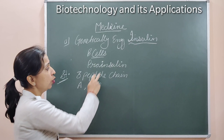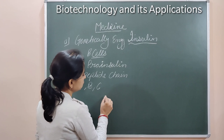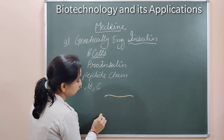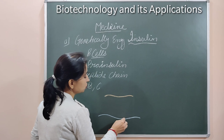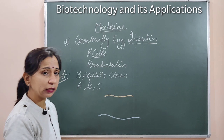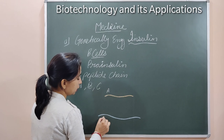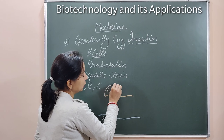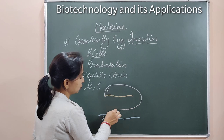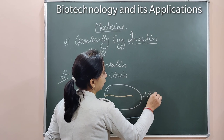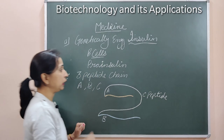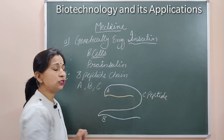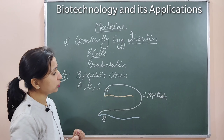These three chains are present in pro-insulin. The chain A and chain B remain connected through one more chain, which is known as chain C or C-peptide. So in pro-insulin, three chains are present: chain A, chain B, and the third chain is the C-chain or C-peptide.